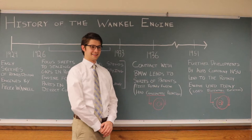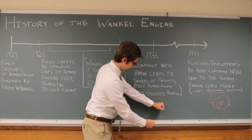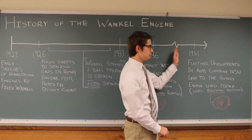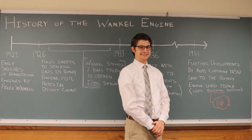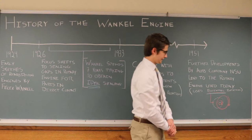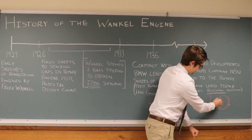This engine used concentric rotation, where the rotating assembly and the output shaft share the same axis of rotation. Later on, in 1951, automobile company NSU further developed this design, resulting in the rotary engine that we know today. This design used eccentric rotation, where the rotating assembly's axis of rotation is offset from the output shaft.